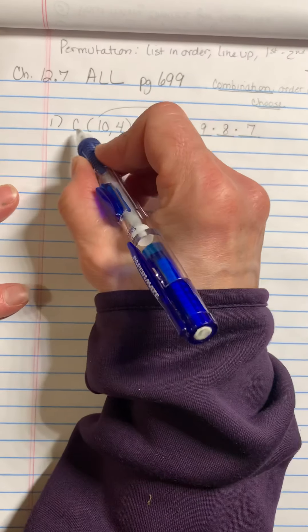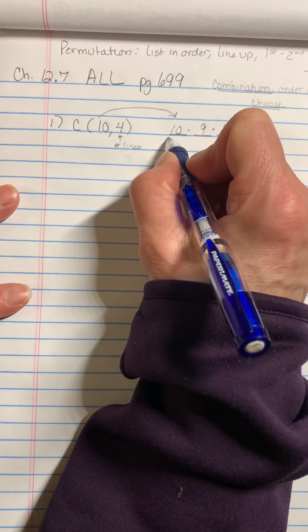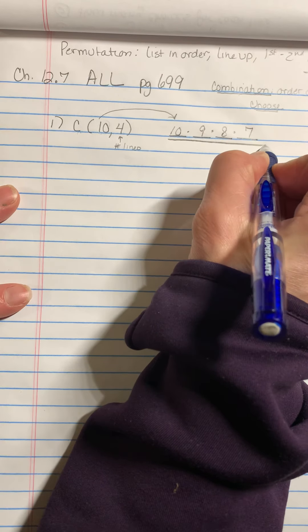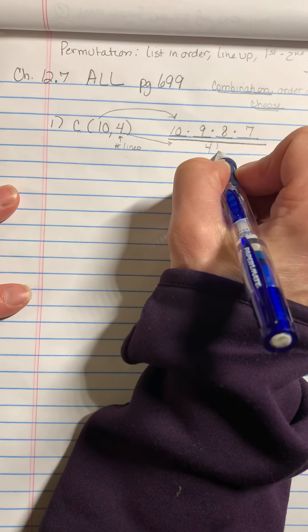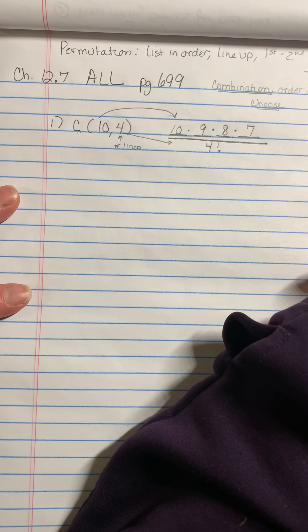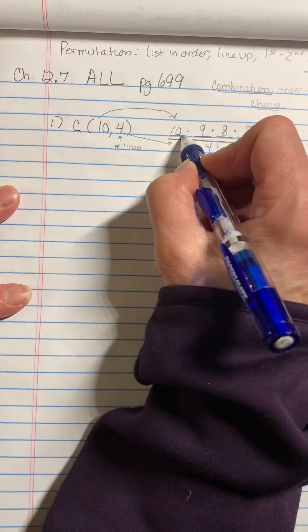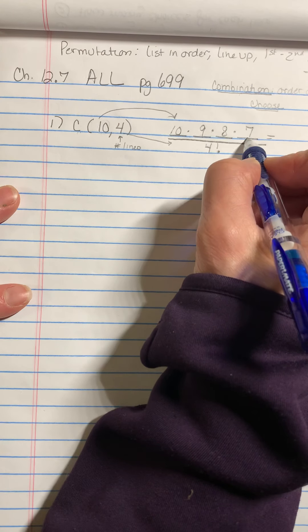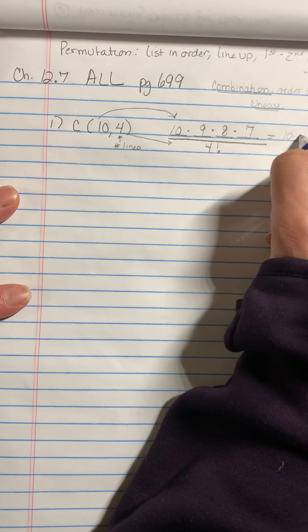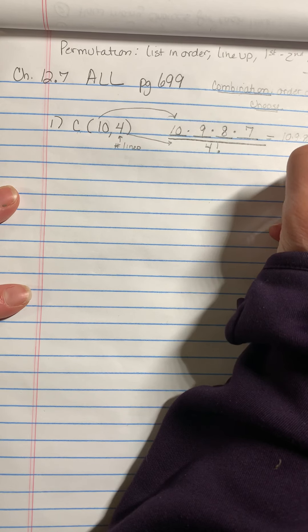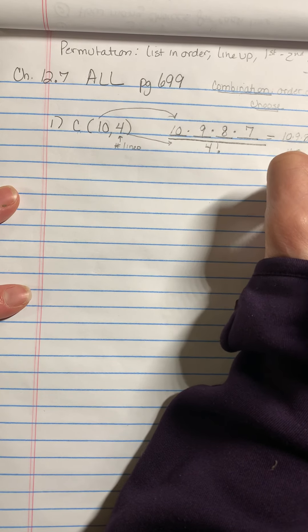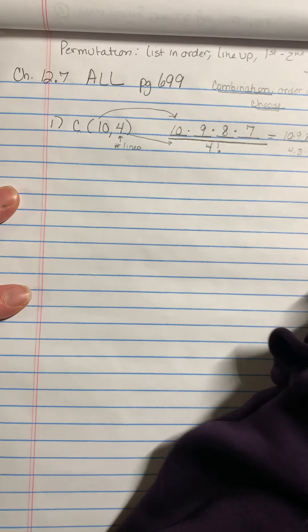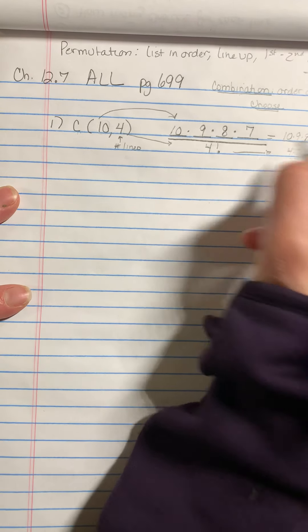Now you're not done because it's a combination. Remember then we're going to divide it by four factorial. So don't forget that part of it. So you're going to go 10 times 9 times 8 times 7, divided by 4 times 3 times 2 times 1. That remember that's factorial.